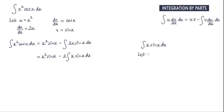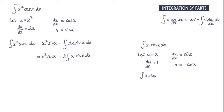So let me do that over here. We've got the integral of x sin x dx. I'm going to let u equal x, so du by dx is equal to 1. We have dv by dx — that's going to be sin x. And the integral of sin x is negative cos x. So the integral of x sin x dx is equal to u multiplied by v.